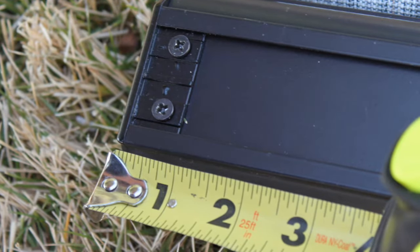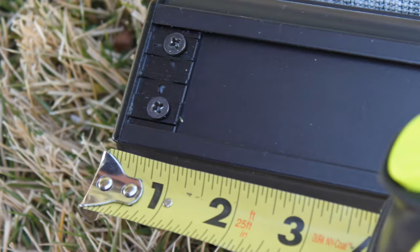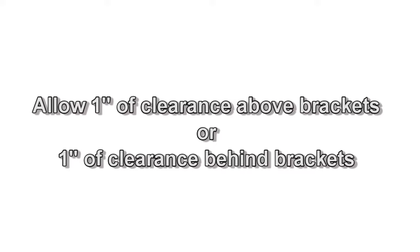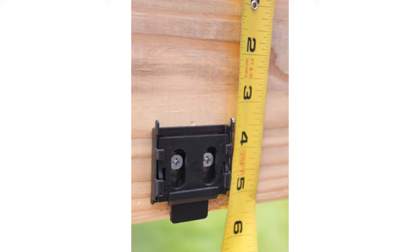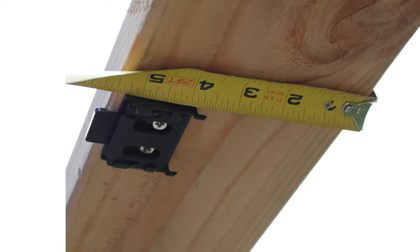If you choose to install the third bracket, install it near the center of your shade. When installing your valence brackets, you must allow at least one inch above the bracket or one inch behind the bracket to allow the shade to click into place.